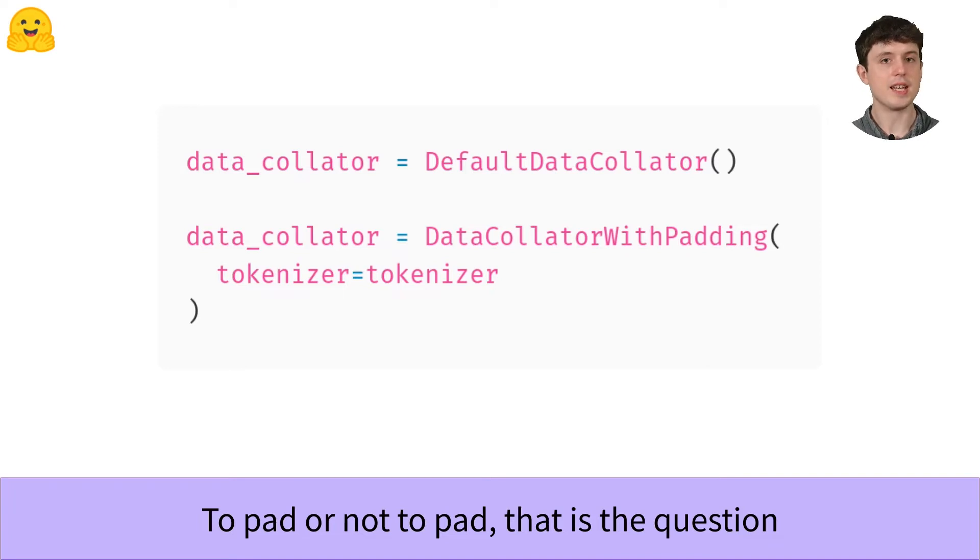So first we'll see the basic data collators. These are DefaultDataCollator and DataCollatorWithPadding. These are the ones you should use if your labels are straightforward and your data doesn't need any special processing before being ready for training.